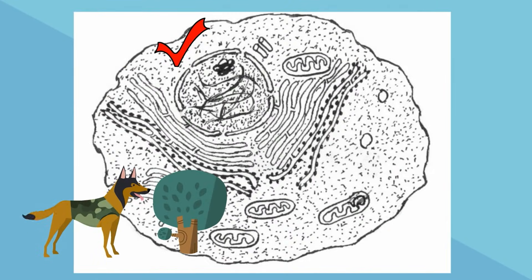All eukaryotic cells have a nucleus, and bacteria and other prokaryotic cells do not have a nucleus.